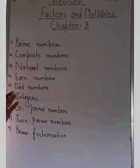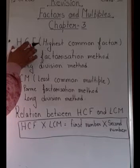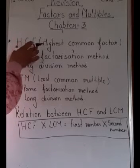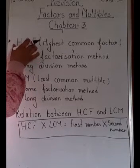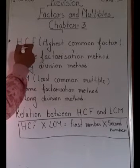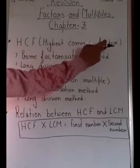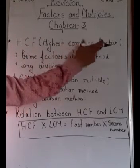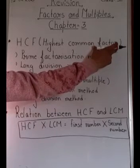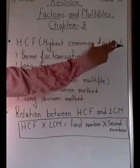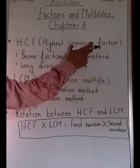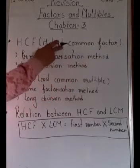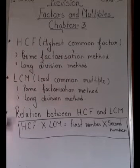The first topic is HCF. In this chapter you need to know how to find HCF and LCM. HCF means Highest Common Factor. First you have to find the common factors — factors are numbers which divide the given number completely. Then you find the highest among the common factors of the two numbers.